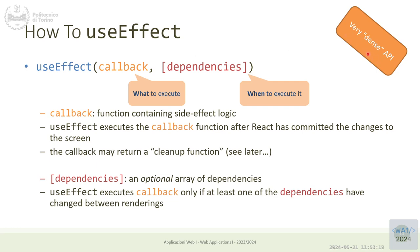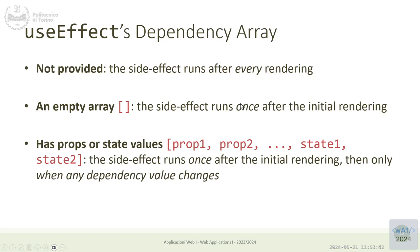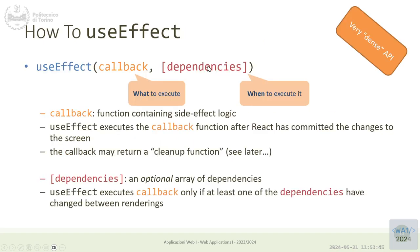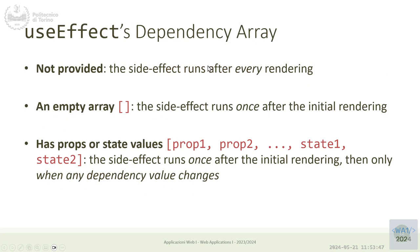This is a very dense API — it looks simple with just two parameters: one callback and one list of dependencies. But the designers tried to pack as many functionalities as possible into this simple interface, so there are a lot of corner cases. For example, the dependency array — the second argument — may be missing, empty, or containing something, and there are different meanings for each.